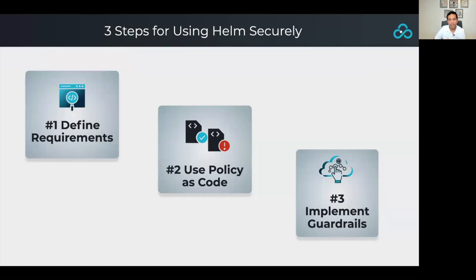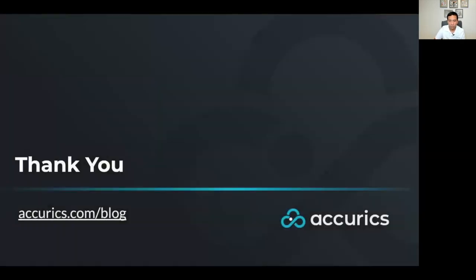Let's recap what we did today and how to implement Helm securely. Step one: identify and define requirements applicable to your system — we captured three from the CIS benchmark for Kubernetes. Step two: take those requirements and write declarative Rego policies to evaluate your infrastructure as code against them. Step three: implement guardrails to ensure policies are being met and get feedback on violations as early as possible. Thanks for watching — to learn more about TerraScan, cloud vulnerabilities, policies, and best practices, visit our blog at accurix.com/blog.